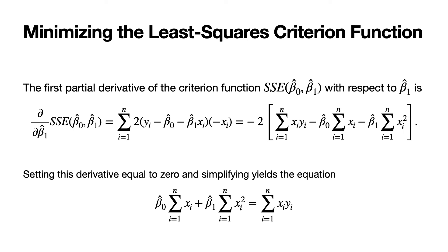Taking the first partial derivative of SSE with respect to beta one hat gives the following expressions. After simplification we get the expression on the far right-hand side, and setting that equal to zero with a bit of simplification gives the equation shown at the bottom of the slide: beta zero hat times the sum of the x's plus beta one hat times the sum of the squared x's equals the sum of the x's times the y's.